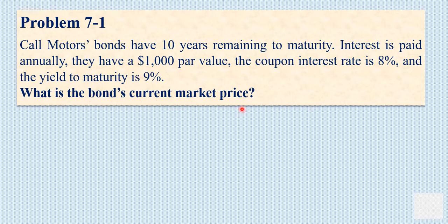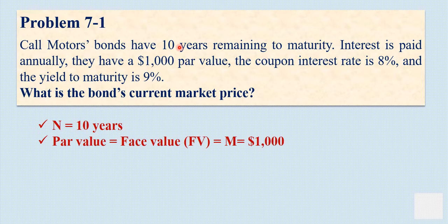We have to calculate the price of the bond. 10 years remaining to maturity — this is N, equal to 10 years, the maturity of the bond. The par value of the bond, which is the face value, or capital M for short, is $1,000.